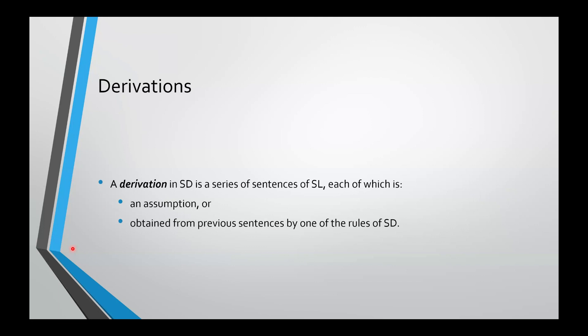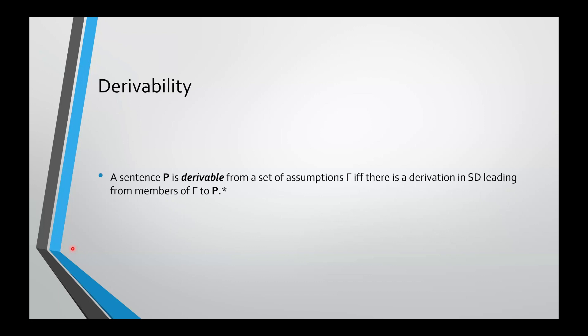So let's get into some definitions. Derivation in SD is a series of sentences of SL. And each of these sentences is either an assumption, or it is obtained from previous sentences by one of the rules of SD. And a sentence is derivable from a set of assumptions, gamma, if and only if there is a derivation in SD that leads from members of gamma to P.